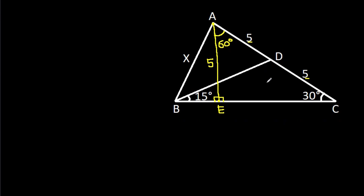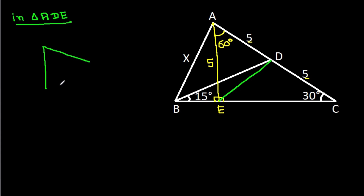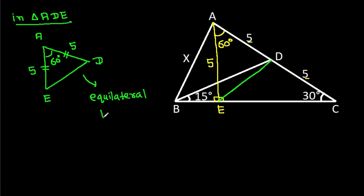Now, if we join DE, then in triangle ADE, we have AE equal to AD, that is 5, and this angle is 60 degrees. That means it will be an equilateral triangle, so DE will also be 5, and these two angles will be 60 degrees. DE is 5.